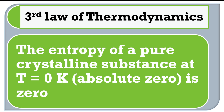Based on entropy we have the third law of thermodynamics, though it is not very popular because it applies only at absolute zero. The third law states: the entropy of a pure crystalline substance at absolute zero temperature (0 Kelvin) is zero. Entropy can become zero only at absolute zero temperature, and only for a pure crystalline substance.